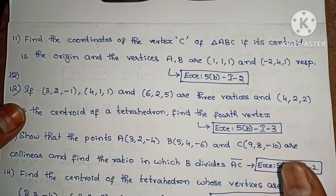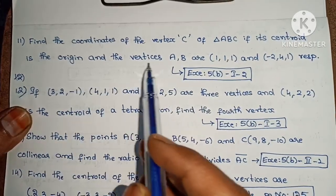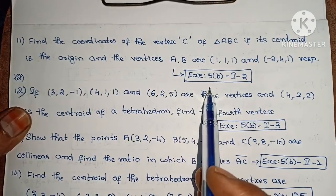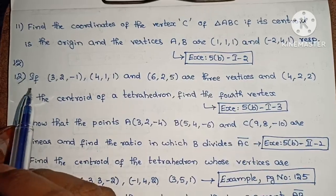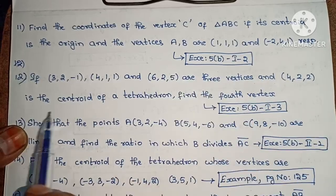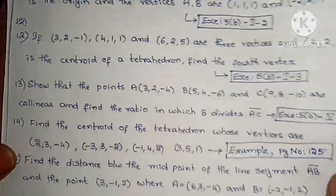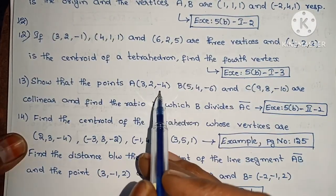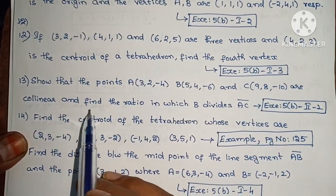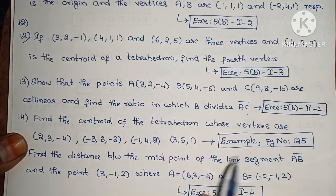Next, find the coordinates of the vertex C of triangle ABC if its centroid is the origin and the vertices A, B are (1,1,1) and (-2,4,1) respectively — Exercise 5B, first Roman numeral, second one. Next, if (3,2,1), (4,1,1) and (6,2,5) are 3 vertices and (4,2,2) is the centroid of the tetrahedron, find the fourth vertex — third one. Next, show that the points A(3,2,4), B(5,4,6) and C(9,8,10) are collinear and find the ratio in which B divides AC — second Roman numeral, second one.